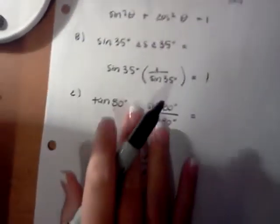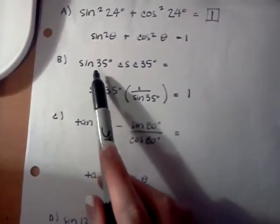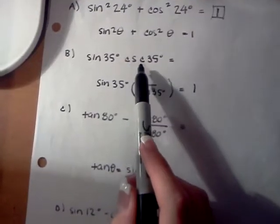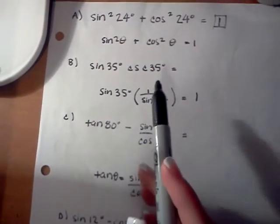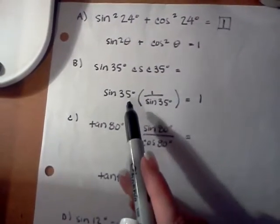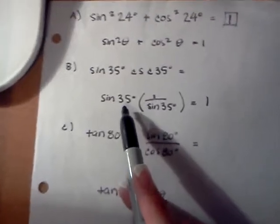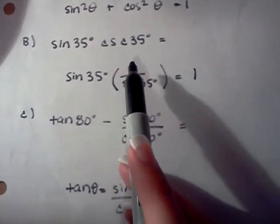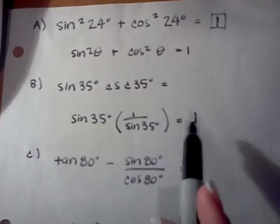For the second one, sine of 35 degrees times cosecant of 35 degrees, we'll use the identity that sine of theta multiplied by 1 over sine theta equals 1.